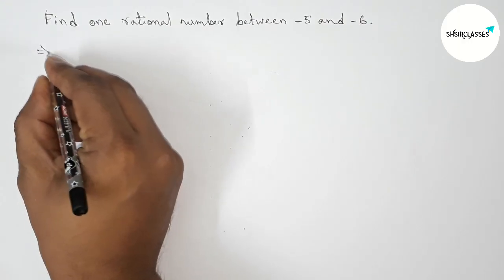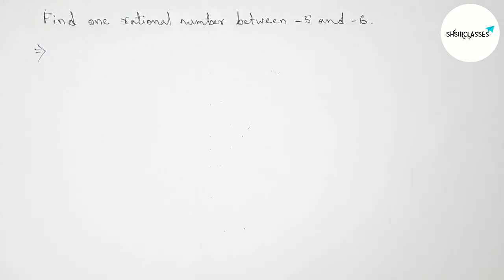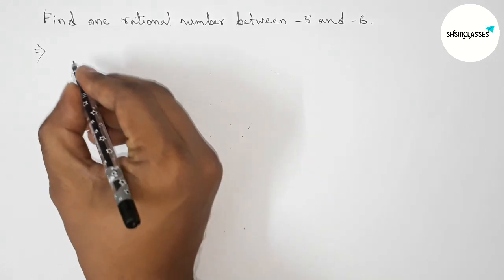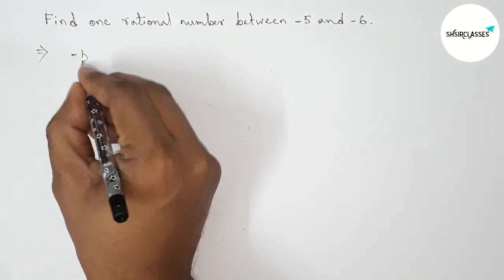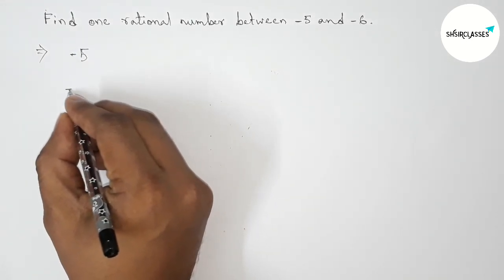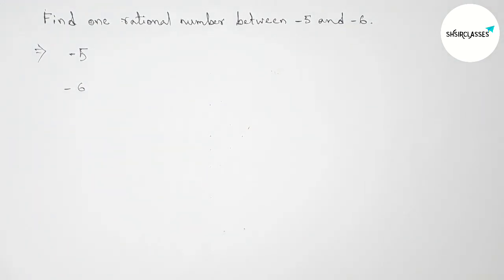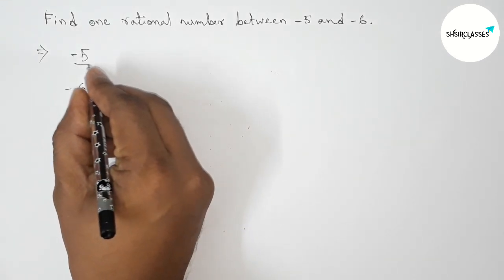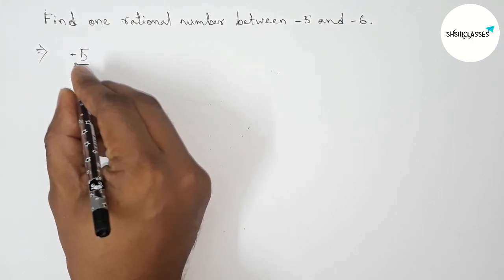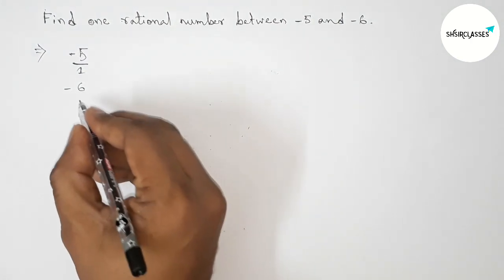First of all, let us solve this problem. So here given two numbers, minus 5, so write down here minus 5 and minus 6. Okay, so now we can take here minus 5 as minus 5 by 1, and similarly taking here minus 6 by 1.